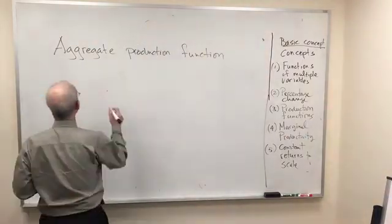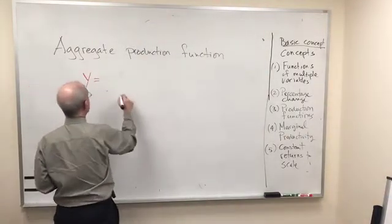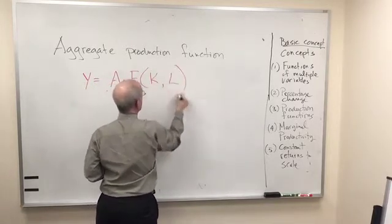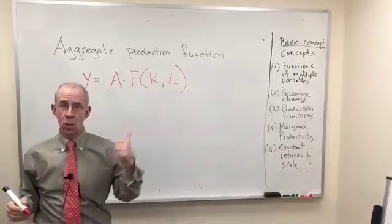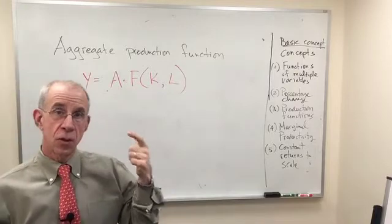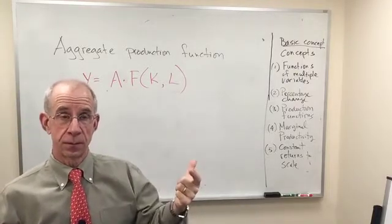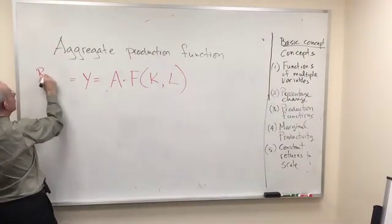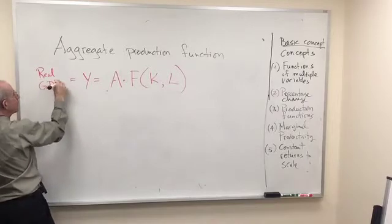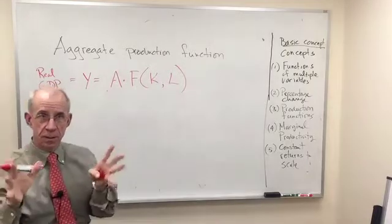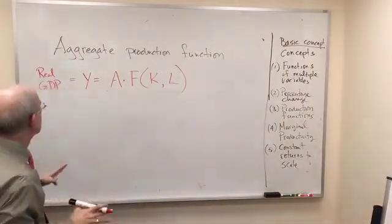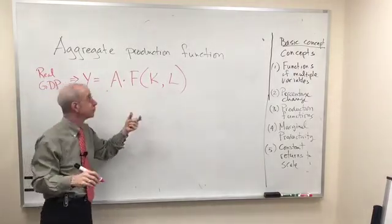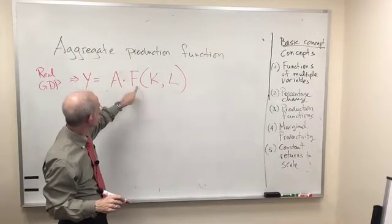Now the way I'm going to write this aggregate production function is the following, where Y represents the total value of output in real terms, real GDP, inflation adjusted, the actual value of output, and that is going to equal a production function, F, which relates the amount of capital...